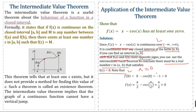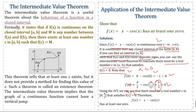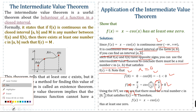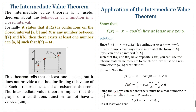Suppose we take x = 0: we get f(0) = 0 - cos(0) = -1, which is less than zero. If we take x = π/2, we get f(π/2) = π/2 - cos(π/2) = π/2, which is greater than zero. Using the Intermediate Value Theorem, there must be a real number c in [0, π/2] such that f(c) = 0. Therefore, f(x) = x - cos(x) has at least one zero.